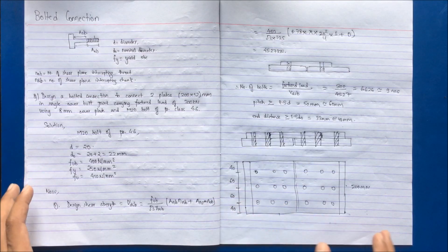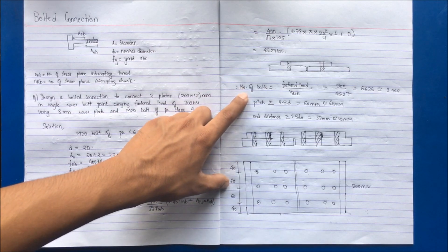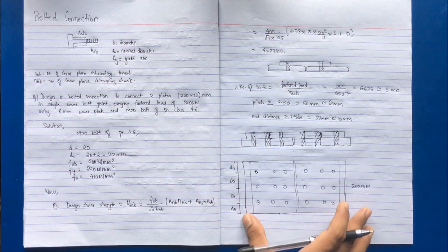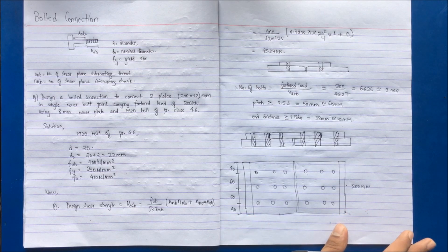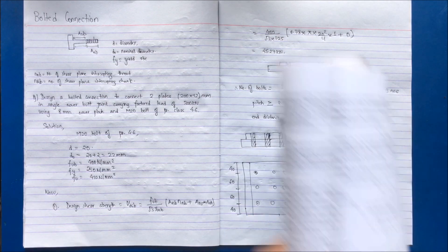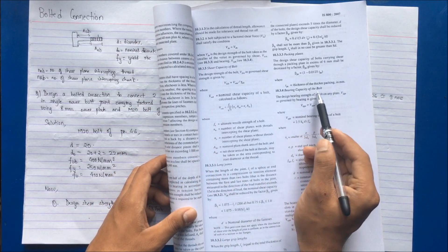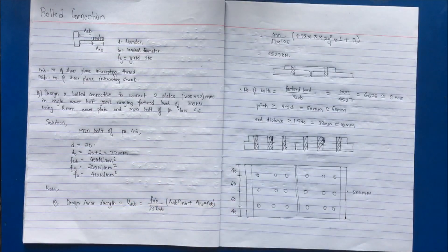This completes the first step of the design: the number of bolts has been calculated and the pitch and end distance of the bolted connection are determined. The second step is to calculate the bearing capacity of the bolt, given by the formula for Vdpb.